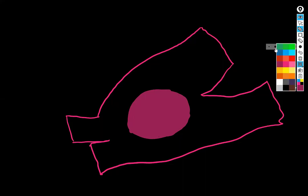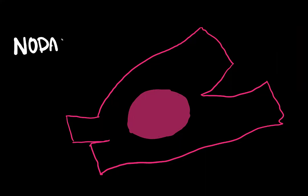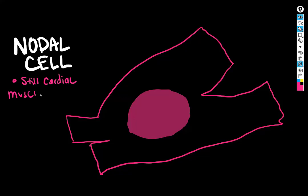So let's draw the features just so we have all of our parts and ducks in a row, and I'll label this as well. Still cardiac muscle, just fancy.